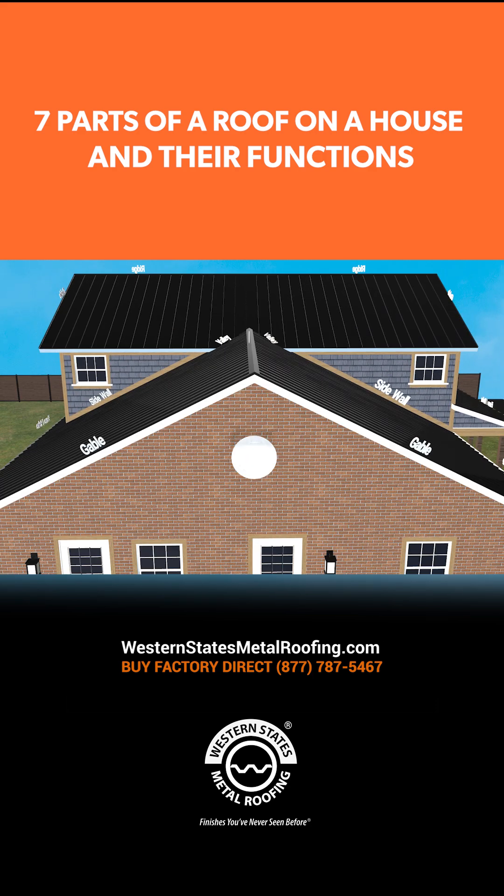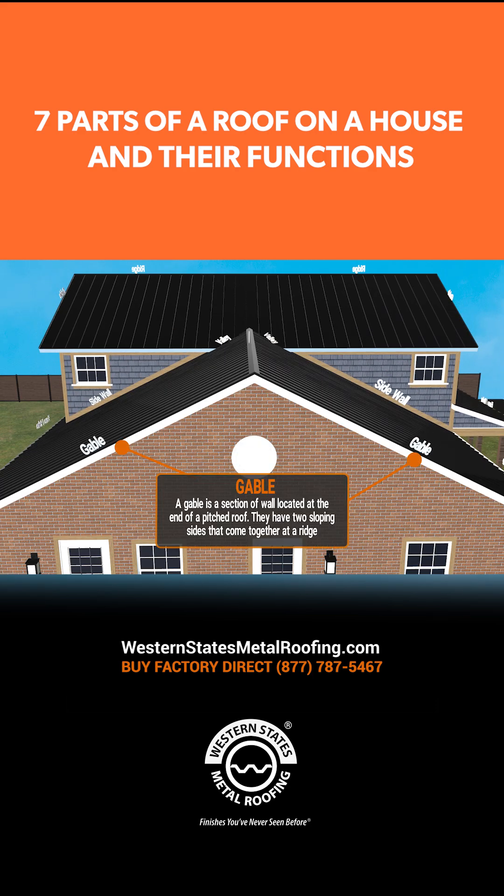A gable is a section of wall located at the end of a pitched roof. They have two sloping sides that come together at a ridge.